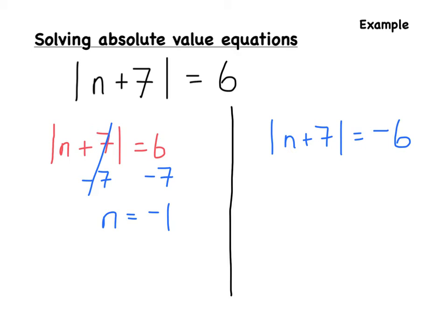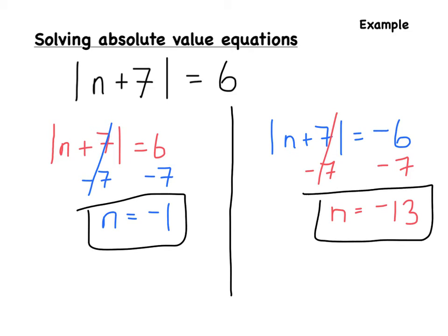On the other side, we have n plus 7 equals negative 6. Subtract 7 from both sides: n equals negative 13. So our final answer is n equals negative 1 or n equals negative 13. To verify: if n equals negative 1, then negative 1 plus 7 is 6, and the absolute value of 6 is 6 — correct. If n equals negative 13, then negative 13 plus 7 is negative 6, and the absolute value of negative 6 is also 6 — correct. That's why we use both a positive 6 and a negative 6.